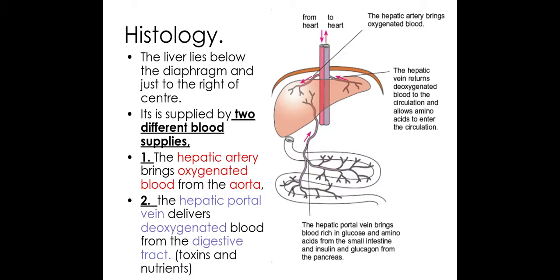The second blood supply is from the hepatic portal vein and this delivers deoxygenated blood from the digestive tract. The liver needs this because this blood will contain toxins which it will try to cleanse the blood of, and it also contains nutrients such as glucose for aerobic respiration.